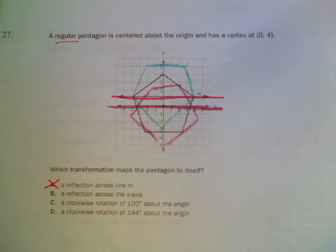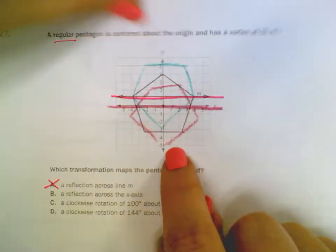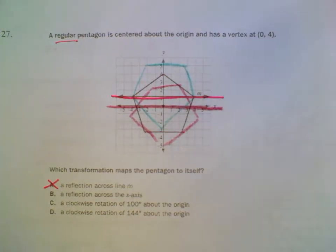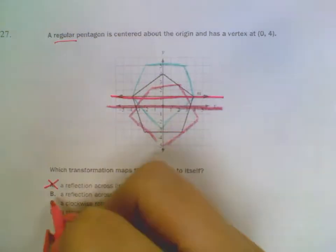which also doesn't map to itself. Remember, your line of reflection, you could fold it, and that's where your new picture would be. So, it's not going to be a reflection across the x-axis either.